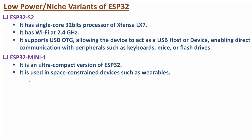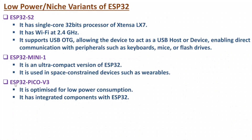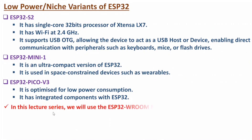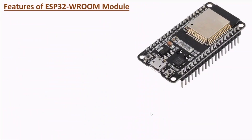The third low power variant is ESP32 Pico V3. It is optimized for low power consumption and has integrated components with ESP32. These are the different variants which we use for low power applications. In this video lecture series, I will be using ESP32 WROOM module, which is the standard version of ESP32.